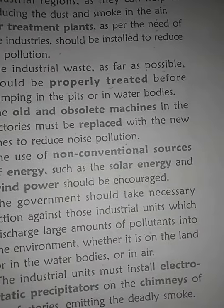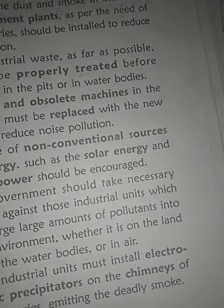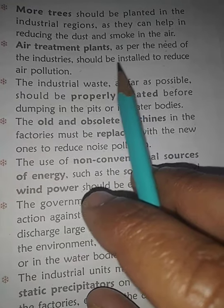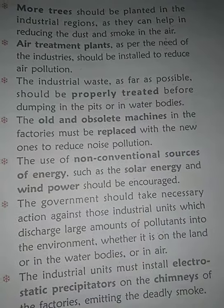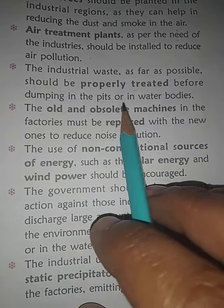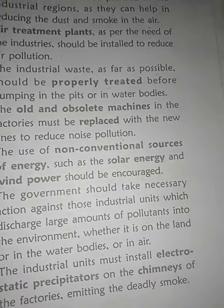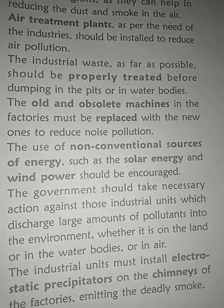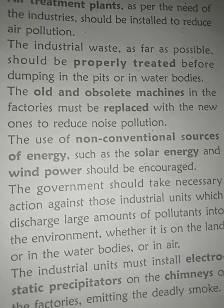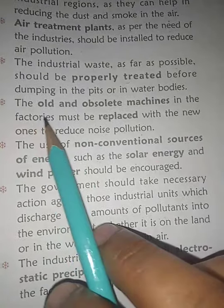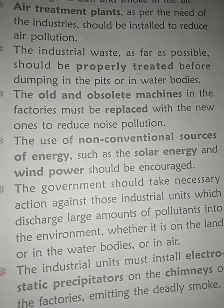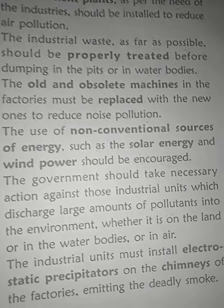First, we have to grow more trees in industrial areas so that dust and smoke in the air are reduced. Air treatment plants should be installed so that polluted air from industries is filtered before being released. Industrial waste should be properly treated before dumping in pits or water bodies. Old and obsolete machines in factories should be replaced with new ones to control noise pollution.